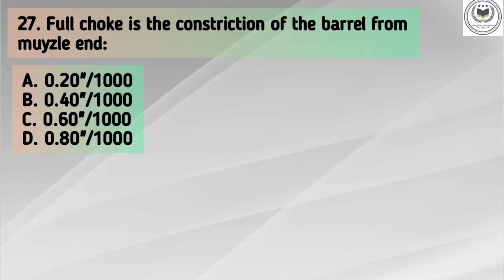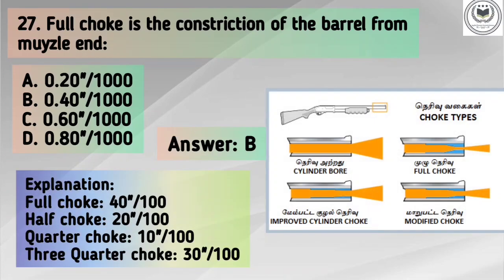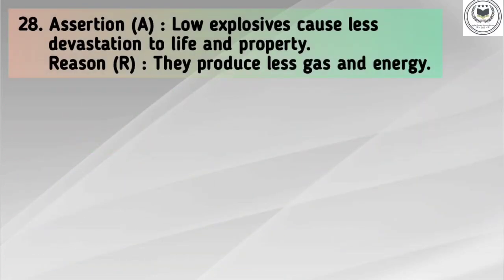The correct answer is option B: 0.40 by 1000 inches. Explanation: Full choke = 40/1000 inches, Half choke = 20/1000 inches, Quarter choke = 10/1000 inches, and Three-quarter choke = 30/1000 inches.